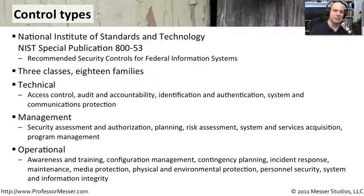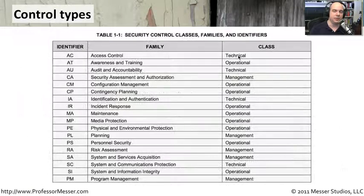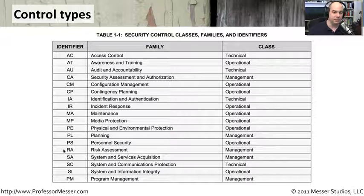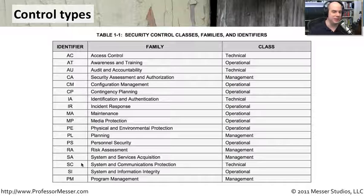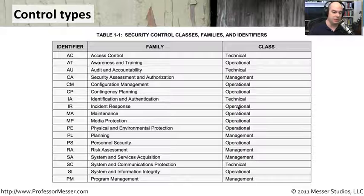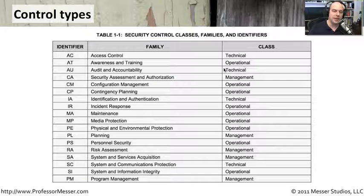All three of these classes work together — you really can't look at just one of them. You have to take into account your technical controls, your management controls, and your operational controls as well. Here's a chart that summarizes these classes, families, and what they call identifiers for each one. It would not be a federal document without a list of abbreviations. For the Security Plus exam, you don't have to remember all the identifiers, but it's useful to know these different classes and understand why the different families are associated with them — and when you start looking at them, they make a lot of sense.